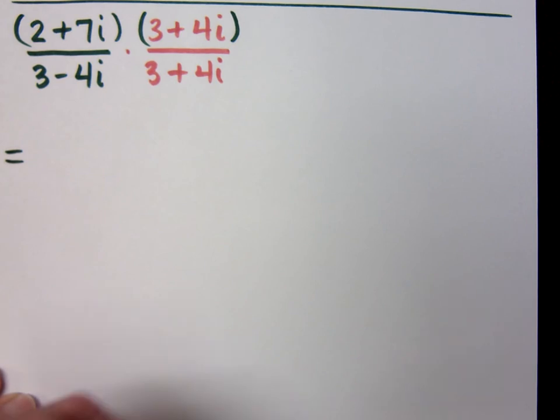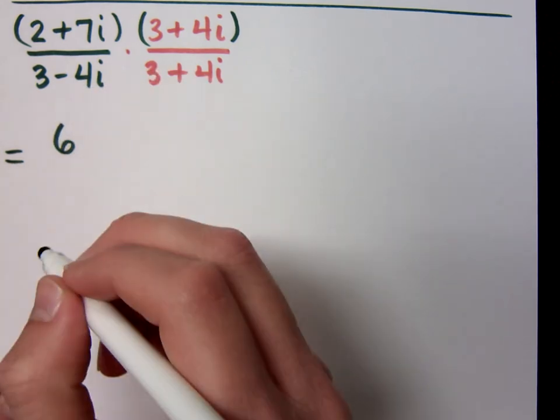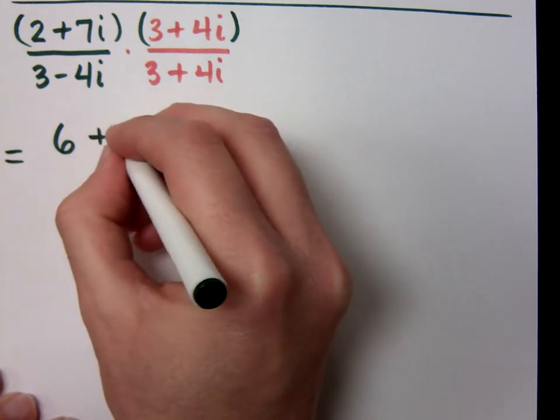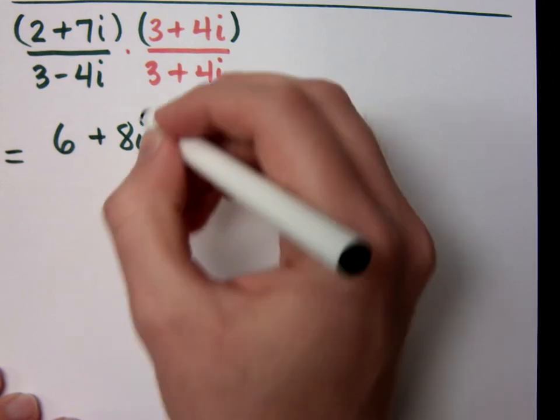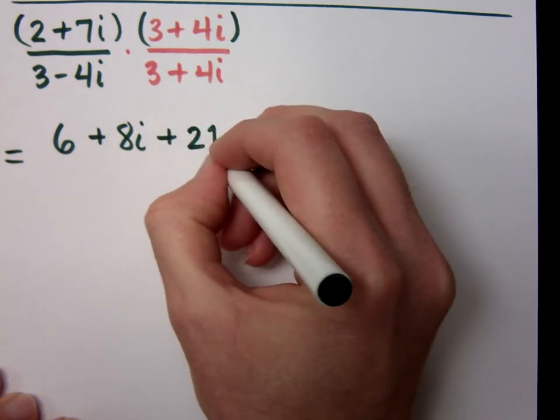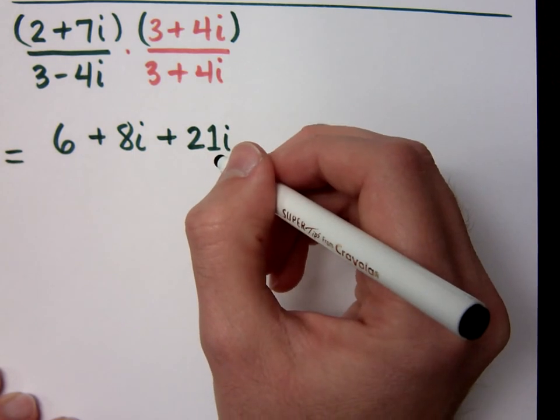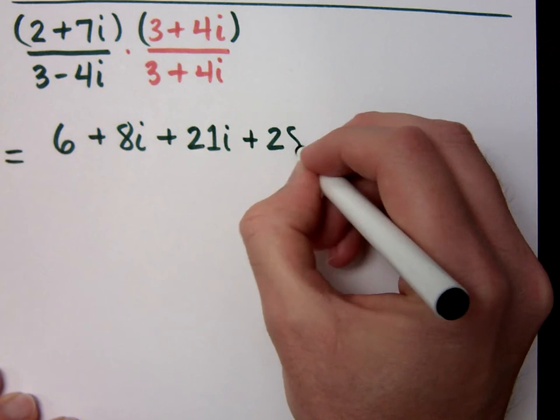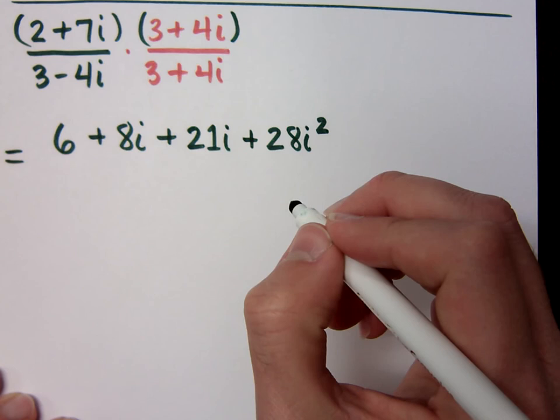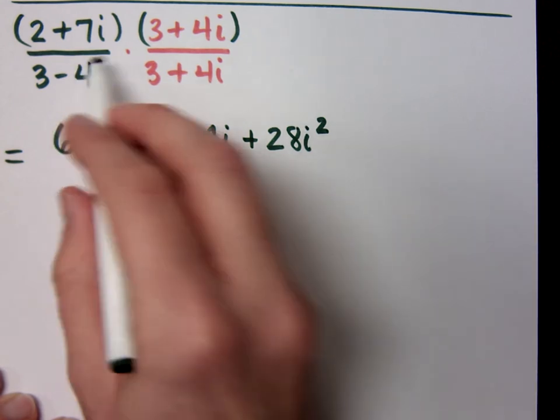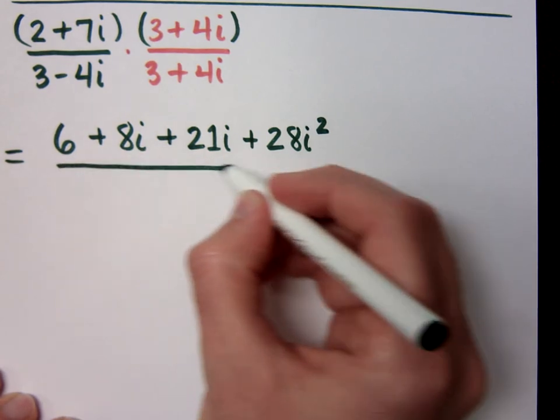I'm going to multiply the first terms. What do I get? Six. Good job. I get six. On the outside, what do you get? Eight. Eight. I get a positive 8i. Moving on to the inside terms. 21i. We get 21i. And finally, the last terms. 28i squared. A positive 28. Good thing you remember the i squared. Just like variables. If I were to multiply x times x, I get x squared. i times i. He's i squared. Okay? Good. Good.